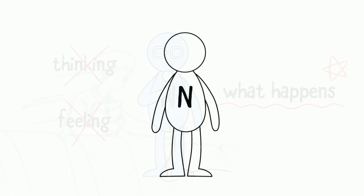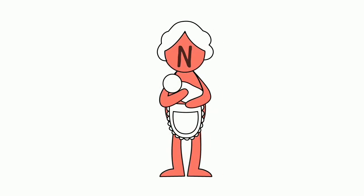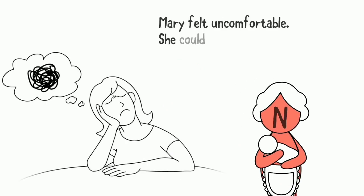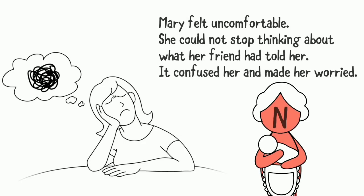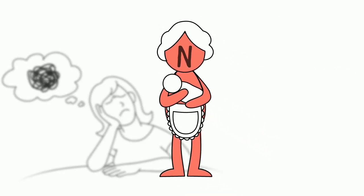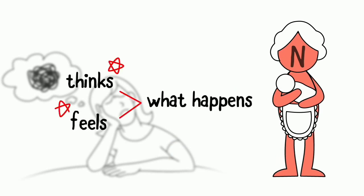In contrast, a narrator can be psychologically close to the character, like a mother who cares deeply for her children. 'Mary felt uncomfortable. She could not stop thinking about what her friend had told her. It confused her and made her worried.' Because the narrator sympathizes with the character, what the character thinks and feels often is more important than what is happening.